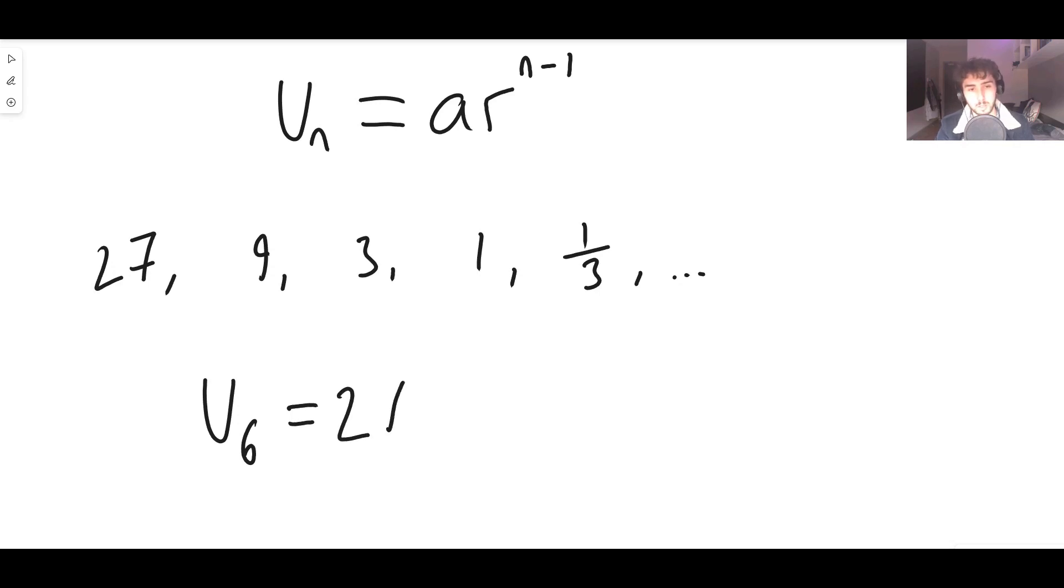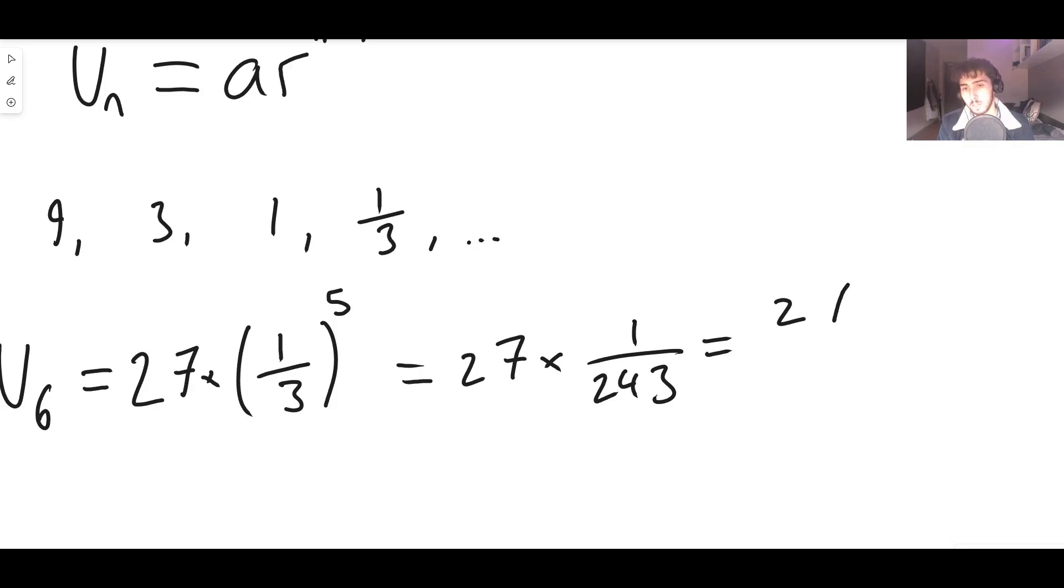So the sixth term is going to be a, so 27, that's the first term, multiplied by the common ratio. The common ratio is one third to the power of six minus one, which is five. So this ends up being 27 times a third to the power of five, which is one over 243. This becomes 27 over 243. 27 divided by 243 is one over nine.